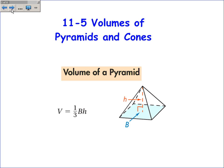The volume of a pyramid is one-third the area of the base times the height. Again, capital B is the area of the base. So take one-third times the area of the base times the height, and that will give you the volume of the pyramid.